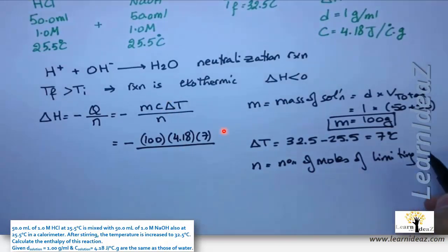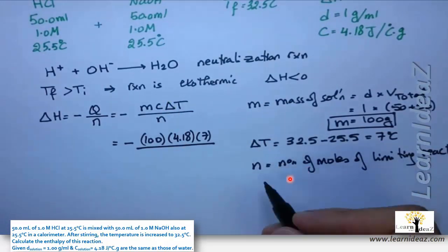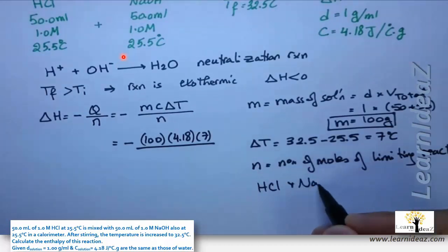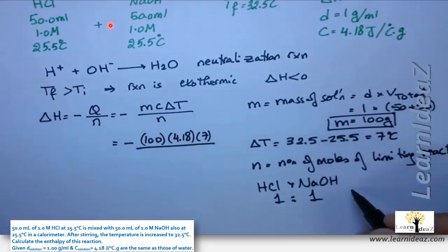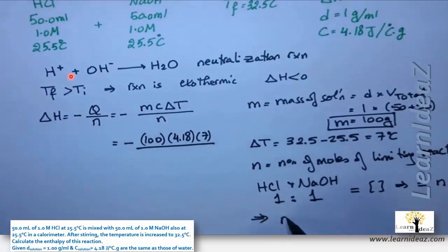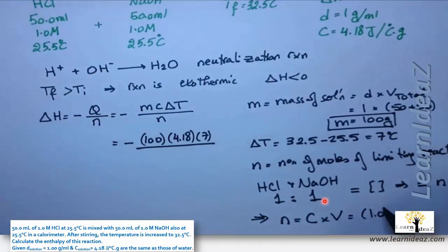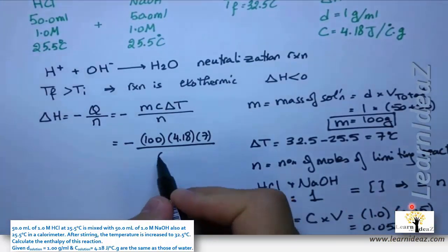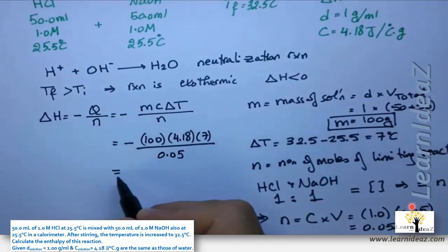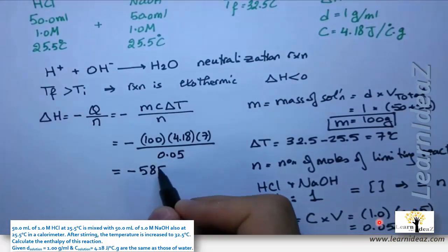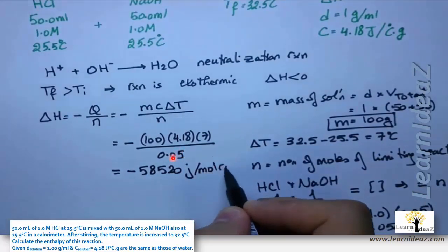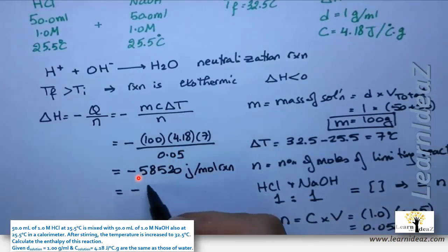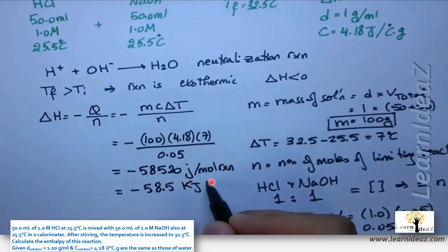n = c × V = 1 M × 0.05 L = 0.05 moles. Therefore delta h = −(100 × 4.18 × 7) / 0.05 = −58,520 J/mol = −58.5 kJ/mol reaction.